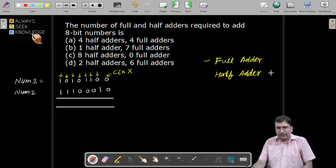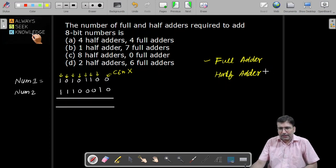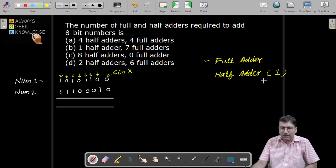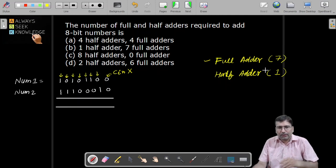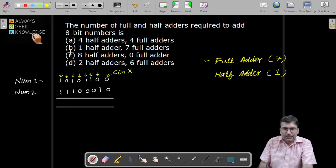So the count which will be required if there are 8 bits we are adding: half adder we can use at only one place, so one half adder will be required, and remaining seven places we should use the full adder. I hope you are getting it. So the answer must be one half adder and seven full adders. This should be the answer.